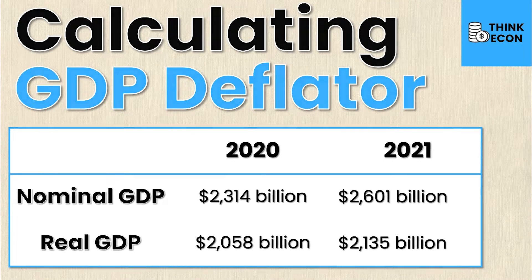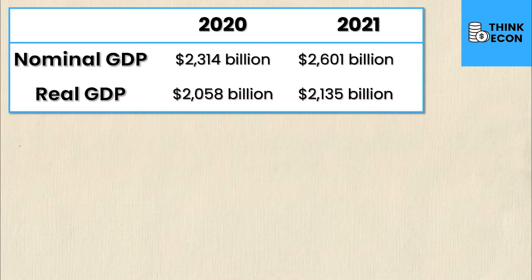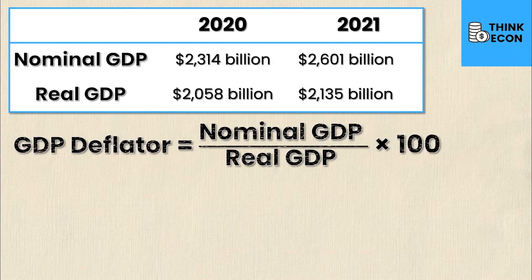When calculating the GDP deflator you'll need two key pieces of information: the nominal and the real GDP for two different years. If you don't know how to calculate those, we have videos dedicated to each on the channel. In this example we'll be given those values, but on an assignment or test you might be expected to calculate them first and then plug them into the GDP deflator equation.